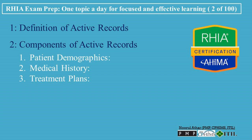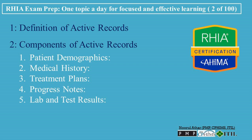Third, Treatment Plans: the active record will also include current treatment plans, outlining ongoing medical care, medications, therapies, and any follow-up appointments or tests that are scheduled. Fourth, Progress Notes: these notes are written by healthcare providers during each visit. They detail the patient's condition, any changes in symptoms, and the care provided during that visit. Progress notes are essential for tracking the patient's recovery or response to treatment. Fifth, Lab and Test Results: any recent lab work, imaging studies, or diagnostic tests will be included in the active record. These results help healthcare providers monitor the patient's condition and make informed decisions about further treatment.